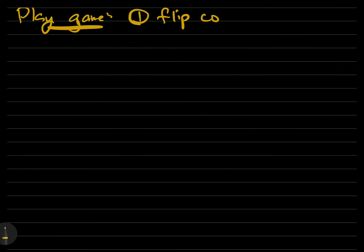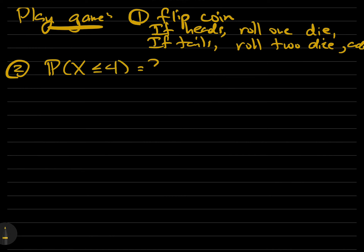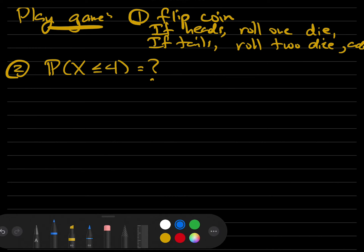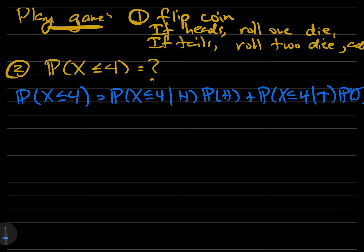Let's consider the following complicated game. We flip a coin, and depending on the result of the coin, we change what we do in the second round. In the first round we flip a coin: if we get heads, then in the second round we roll one die; whereas if we get a tail, we roll two dice and add those two scores. What's the probability that the final score is less than or equal to four? We can use the law of total probability: the probability that X is less than or equal to four equals the probability of X ≤ 4 given heads times the probability of heads, plus the probability of X ≤ 4 given tails times the probability of tails.